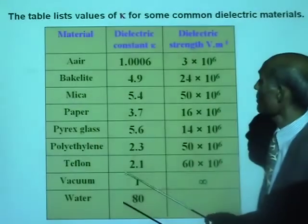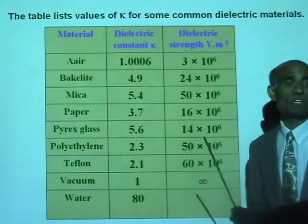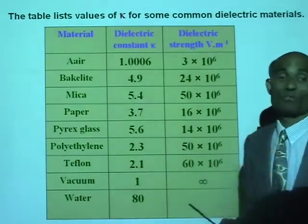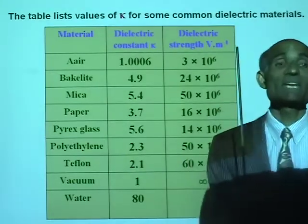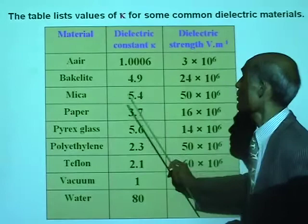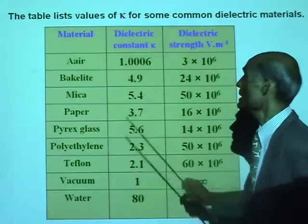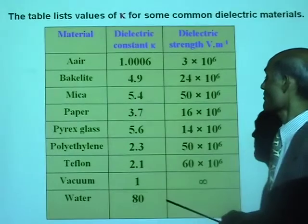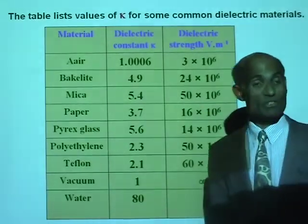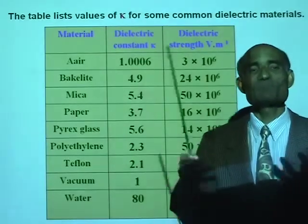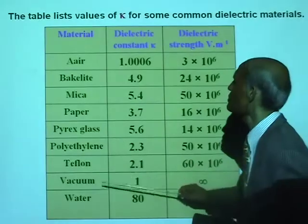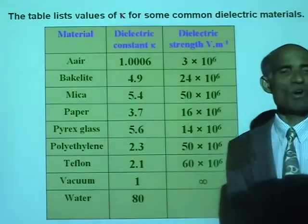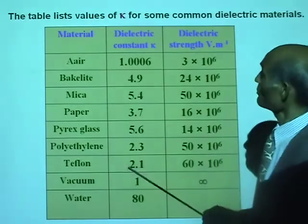Here is a table listing values of kappa for some common materials: air is 1.0006 (taken as 1 in practice), bakelite is 4.9, mica is 5.4, paper is 3.7, pyrex glass is 5.6, and water is a very good dielectric but not practical for constructing capacitors. We will most often use paper, mica, and bakelite.